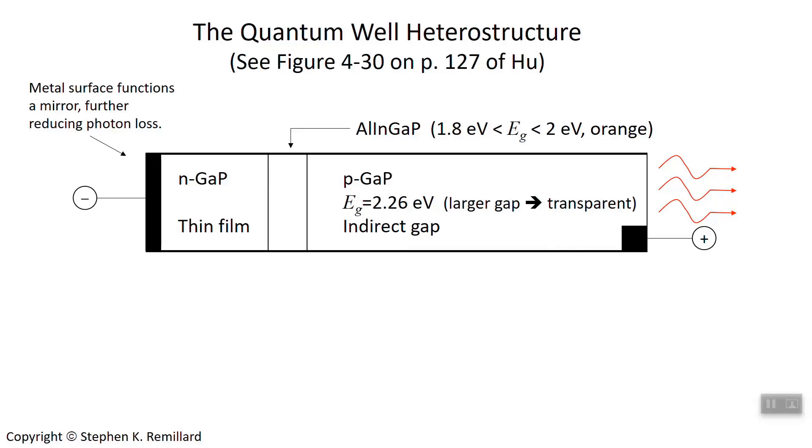You take a gallium phosphide substrate, that is the bulk material is gallium phosphide, as depicted on the right. And you p-dope it. So it's p-doped gallium phosphide. Gallium phosphide has a band gap of 2.26 electron volts. And it's an indirect gap semiconductor. You take this bulk gallium phosphide. This piece can be hundreds of microns thick. And you deposit a thin film of aluminum indium gallium phosphide on top of it. And then on top of that, deposit another thin film of gallium phosphide. And you n-dope that thin film. So you have this sandwich here.